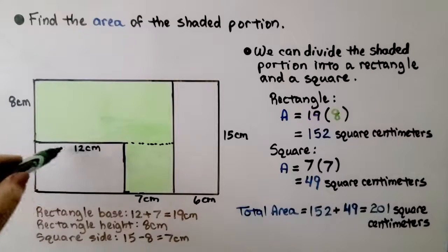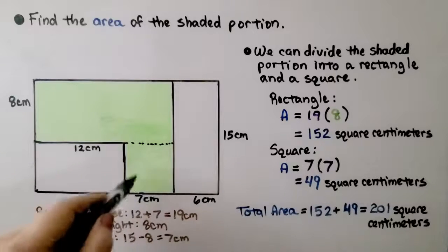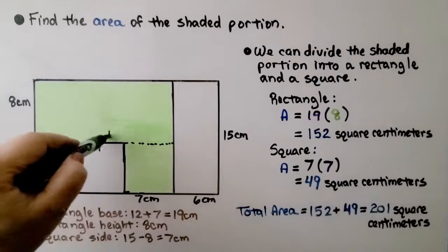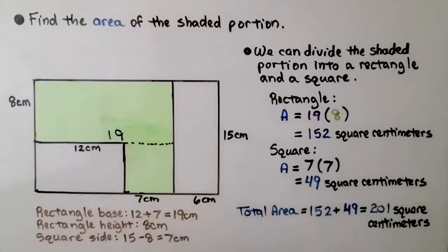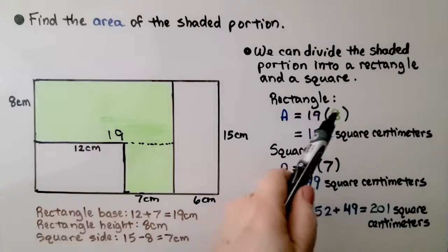Now we need to find the base and height of each. This is 12 centimeters and this is 7, which means that's 7, which means that's 19. Our rectangle is a 19 base and 8 height.